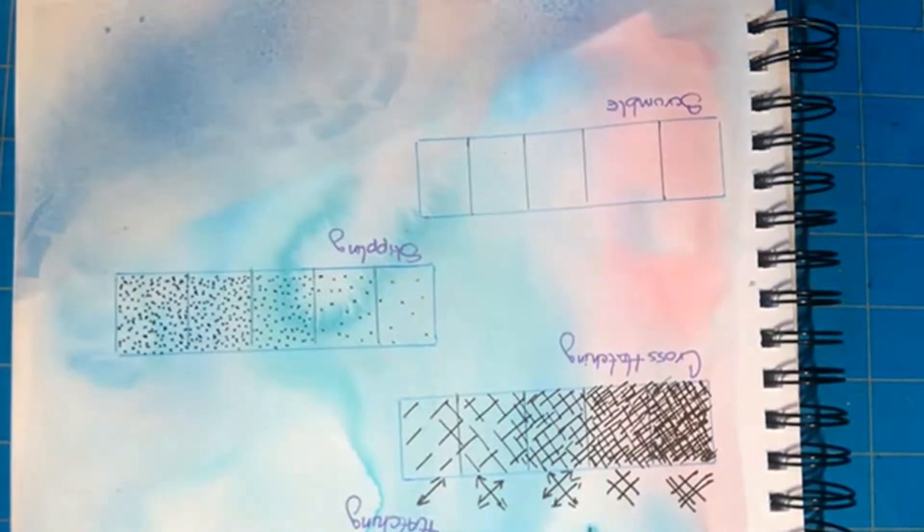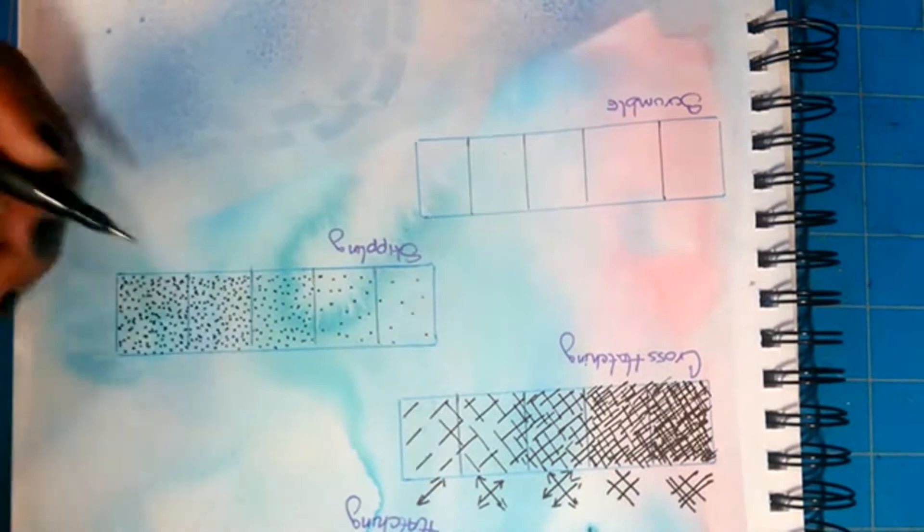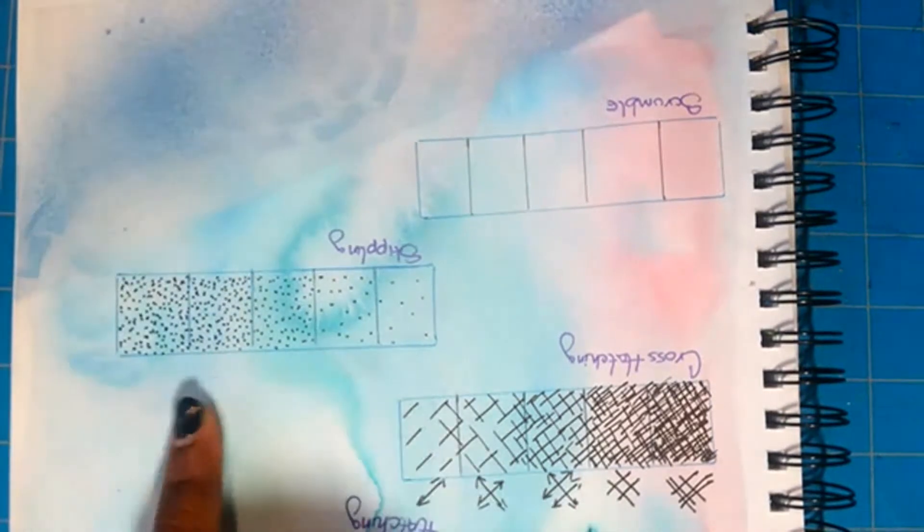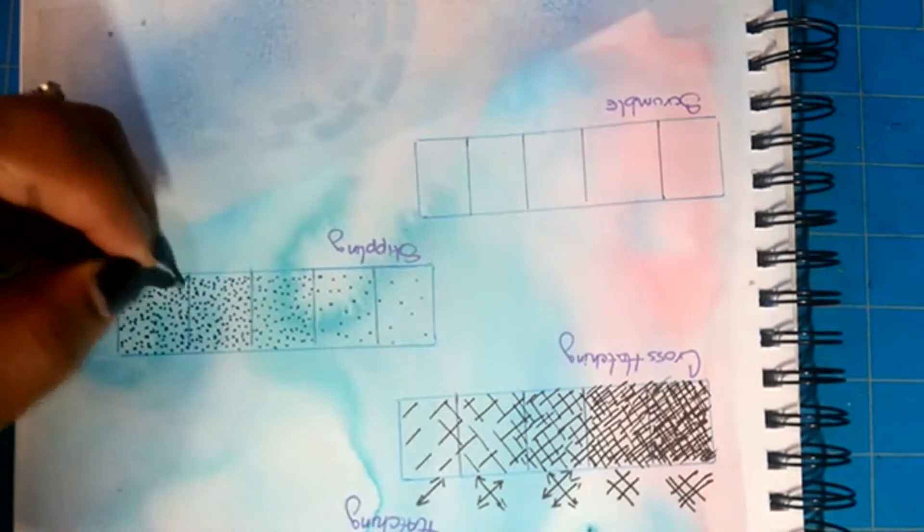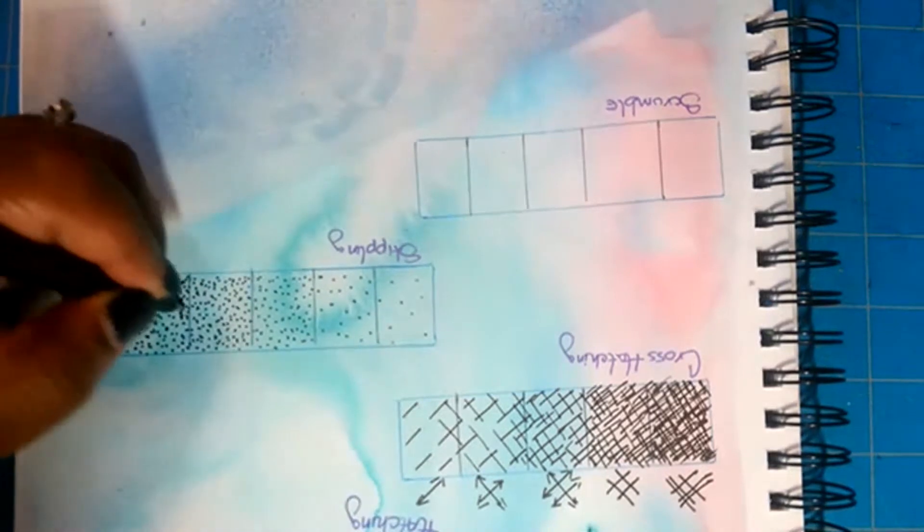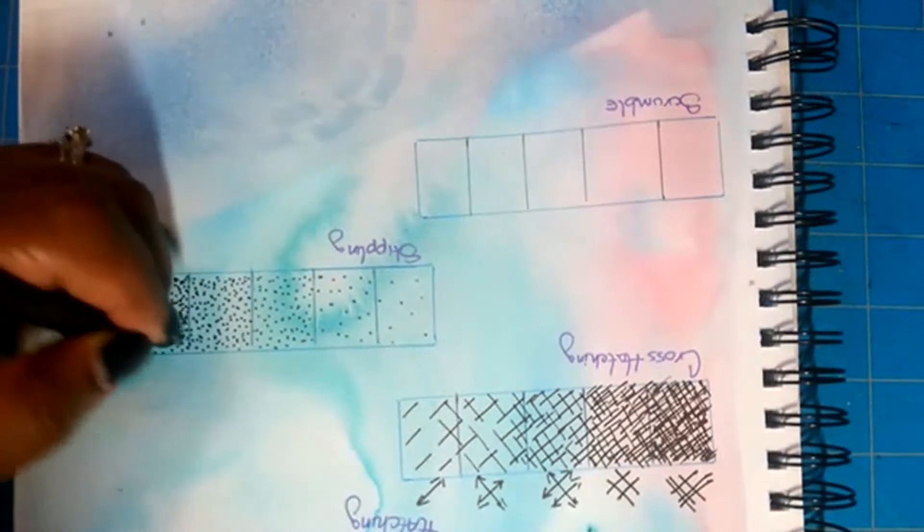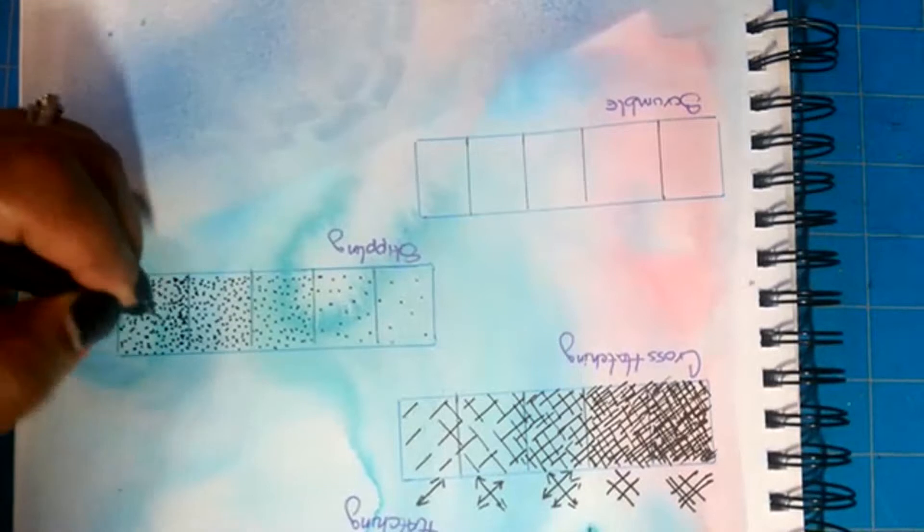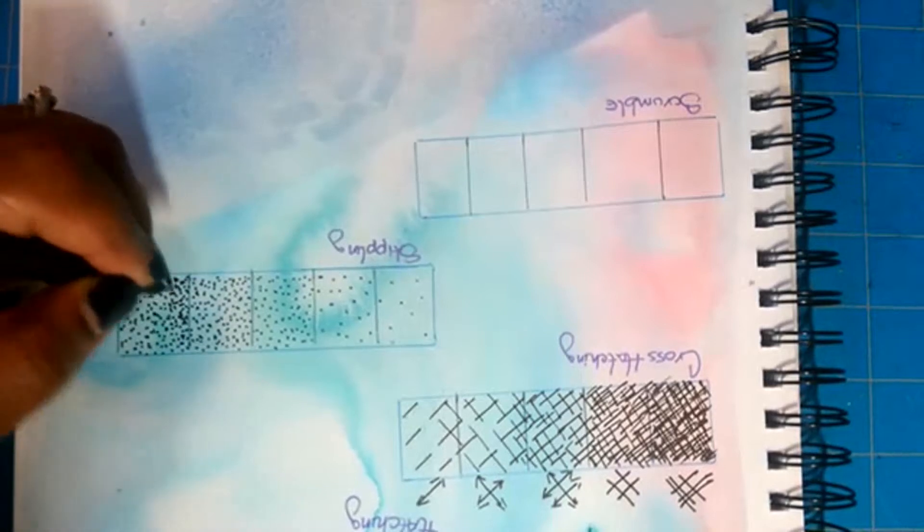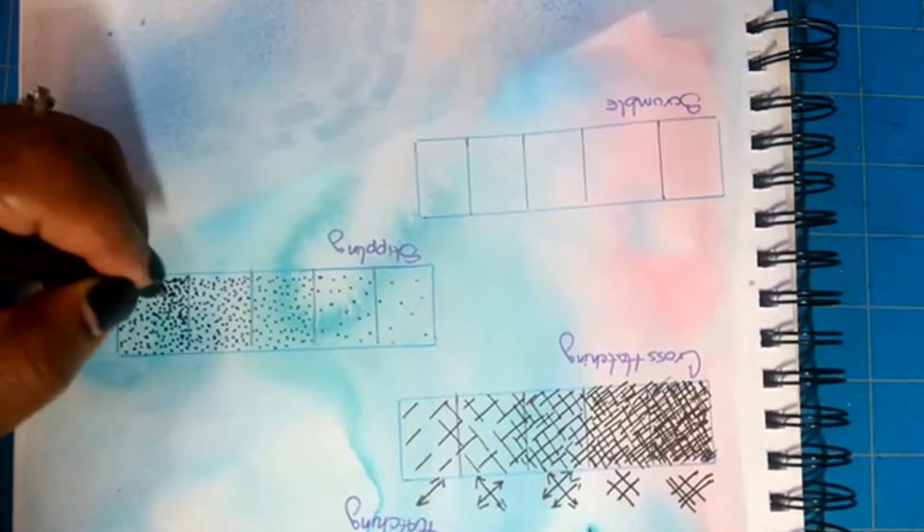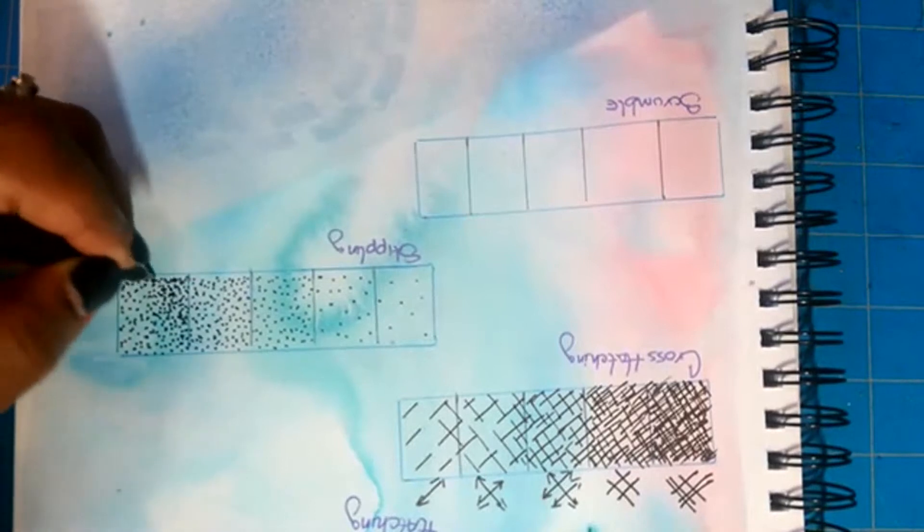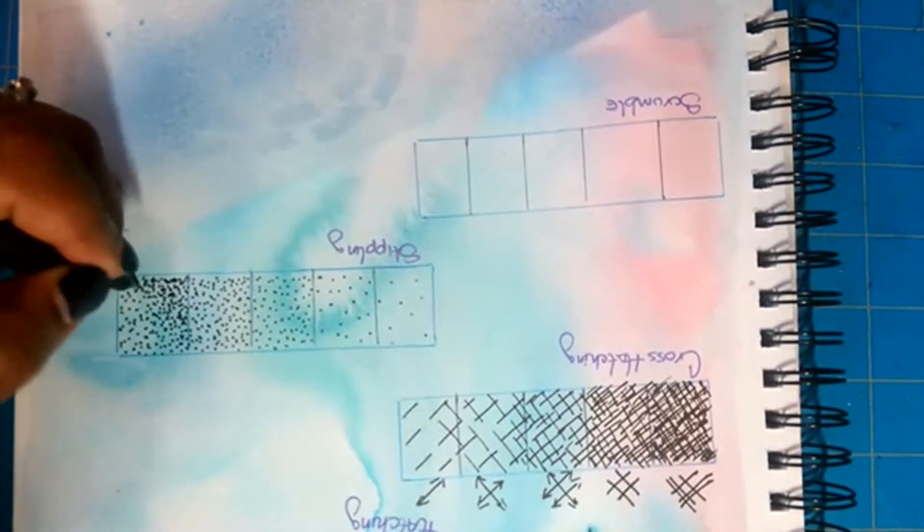All right, so for my last one, my last go through, you see here I have four different values. I am going to go back on my fifth one and make sure that I go over it again to make it darker than box four. Make sure that you're going all the way to the edges.